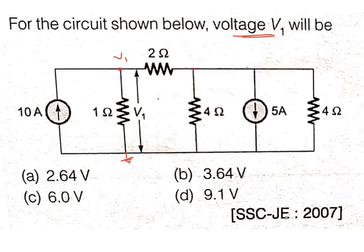These three elements — this element, this element, and this element — have been connected between these two nodes. Let this be one node and this be another node, because there are no elements between these two. Between the ground node and this one node, these three elements are connected, so these three are in parallel.